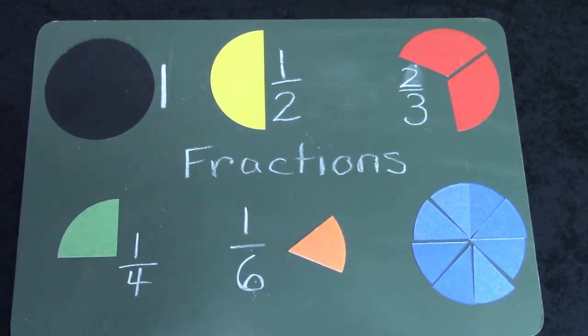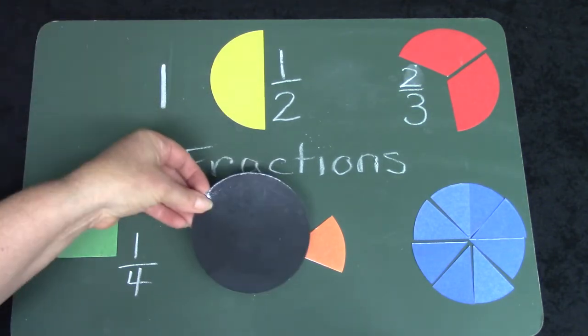And I only have one of them. This is how I would write one sixth, or it's not a full circle. It's not a whole number. It's a fraction. I only have one out of the six pieces that I need to make one whole circle.